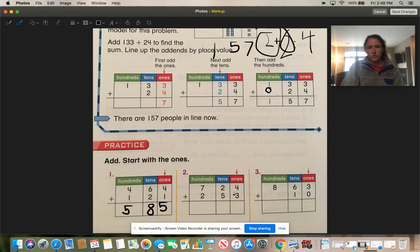Now let's go to number 2. Start in the ones place like the arrow tells us to. 4 plus 3 is 7. 2 plus 5 is 7. And 7 plus 2 is 9. 977.